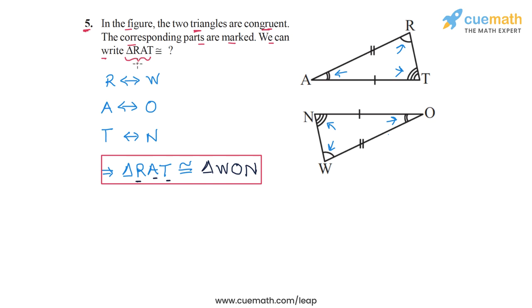Now, one thing that I do, one trick that I use when I have to compare two congruent triangles which are not in the same orientation. So in this case, the problem is that triangle RAT and triangle WON, they are not in the same orientation. So we have to carefully compare the vertices.